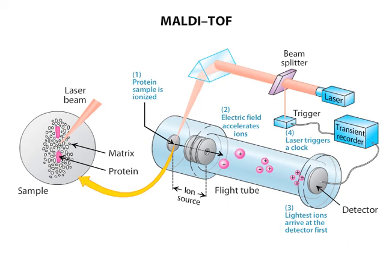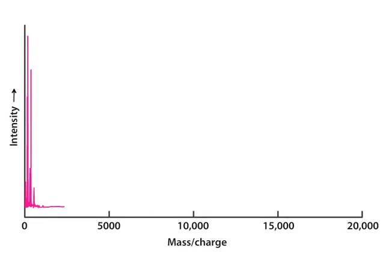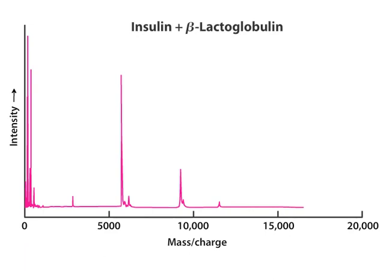The accuracy of MALDI-TOF can be experimentally validated by comparing the measured mass-to-charge ratio with the calculated mass-to-charge ratio for a sample of known proteins. For example, a mixture of the proteins insulin and beta-lactoglobulin produces a unique mass-spectrogram. In this mass-spectrogram, the peak at 5733.9 closely correlates with the calculated mass-to-charge value for beta-lactoglobulin.